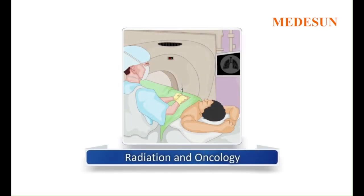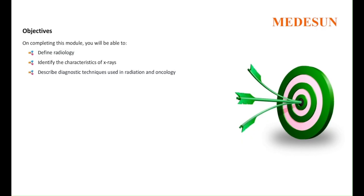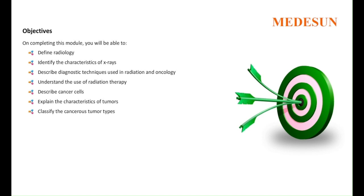Radiation and Oncology. On completing this module, you will be able to: define radiology, identify the characteristics of X-rays, describe diagnostic techniques used in radiation and oncology, understand the use of radiation therapy, describe cancer cells, explain the characteristics of tumors, and classify the cancerous tumor types.